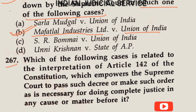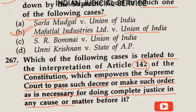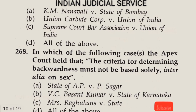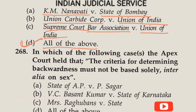Question number 267: Which case is related to the interpretation of Article 142, which empowers the Supreme Court to pass such decree or make such order as is necessary for doing complete justice in any cause or matter before it? Article 142 deals with enforcement of decrees and orders of the Supreme Court. Options: A — K.M. Nanavati versus State of Bombay; B — Union Carbide Corporation versus Union of India; C — Supreme Court Bar Association versus Union of India; D — All of the above. The answer is Option D.